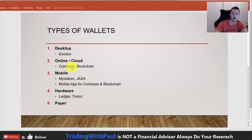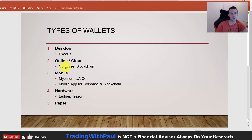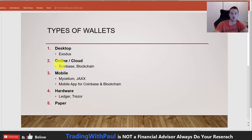Two of the most popular online wallets are Coinbase and blockchain.info. Coinbase is one you will hear a lot of people talking about as a beginner wallet — it's a very good wallet to get started with. It's not one I use personally on a day-to-day basis, but when you are starting out it is a fairly simple wallet to use. You can sign up, register, and buy Bitcoin through the wallet. Blockchain.info is another good one that I do still use and find fairly good.